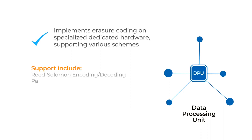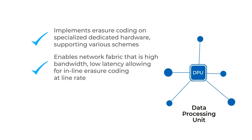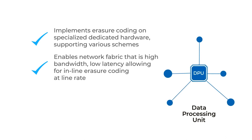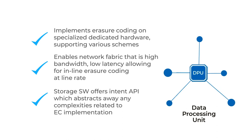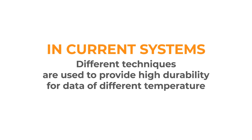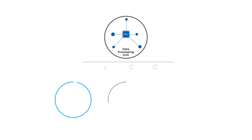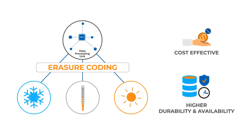Here is where Fungible comes in. Fungible's data processing unit implements erasure coding on specialized, dedicated hardware, supporting various schemes. The DPU enables a network fabric that is high bandwidth and low latency, allowing for in-line erasure coding at line rate. The storage software that comes with the DPU offers an intent API, which abstracts away any complexities related to the implementation of erasure coding — you only need to decide the level of durability your applications require. With the DPU, erasure coding can be applied to data of all temperature, resulting in a more cost-effective, yet more durable and available storage system.